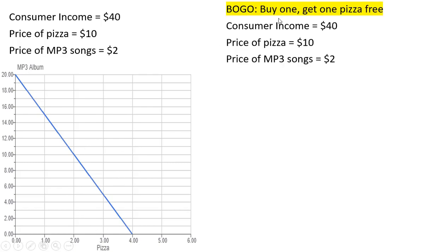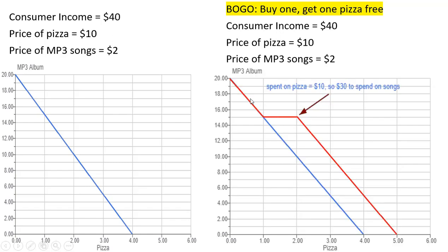Now we're going to take into account buy one get one free pizza — after you buy the first pizza you can get the second one free. The consumer's income is the same, and the price of pizza and MP3s is the same. So what will this budget line look like? The budget line in this case is going to be this red line.